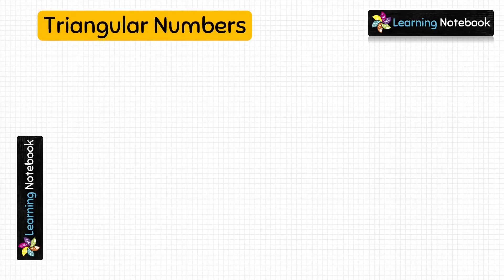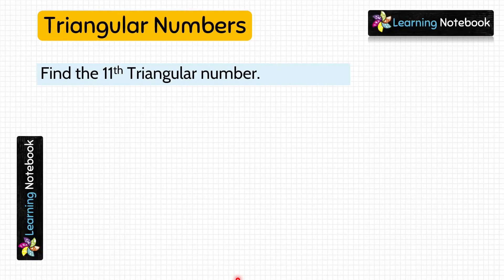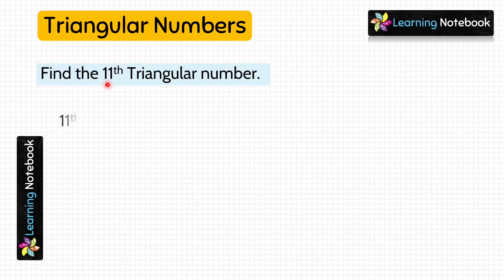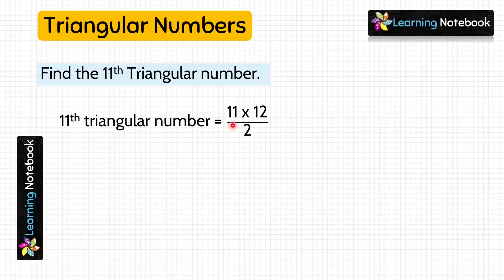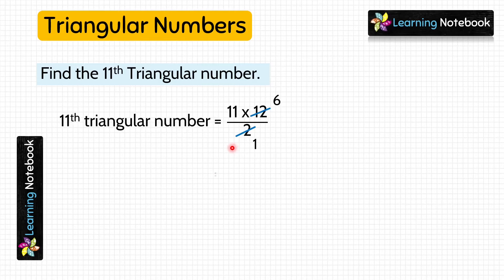Let's do one more question. Find the 11th triangular number. We will multiply 11 by the next number which is 12, and then divide by 2. Simplifying, we get 11 × 6 = 66. So the 11th triangular number is 66.